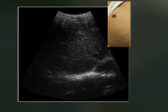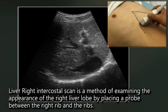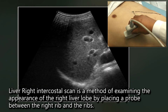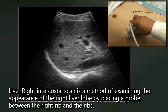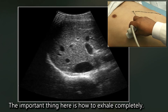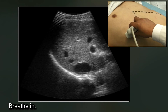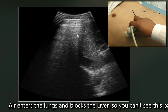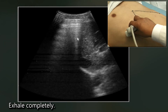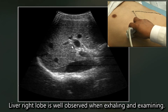Let's practice based on what we have learned. The liver right intercostal scan is a method of examining the right liver lobe by placing a probe between the right ribs. The key point is to exhale completely. When you breathe in, air enters the lungs and blocks the liver. When you exhale completely, the right liver lobe is well observed.